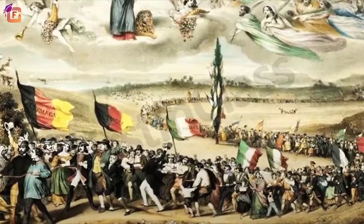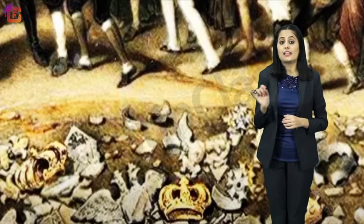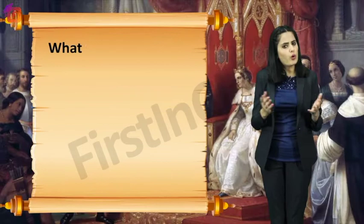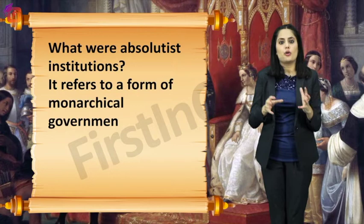At the bottom of the earth lie the shattered remains of the symbols of absolutist institutions. Absolutist institutions refers to a form of monarchical government that was centralised, militarised and repressive.